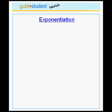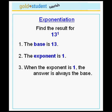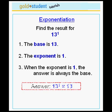Let's do another example. Let's find the result for 13 to the power 1. The base is the number 13. The exponent is 1. Because of our special rule, when the exponent is 1, the answer is always the base. Therefore, 13 to the power 1 is equal to 13.